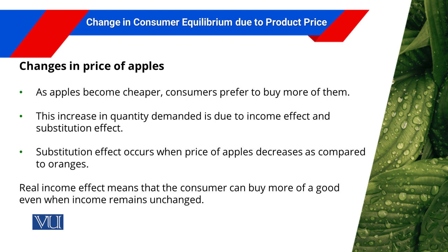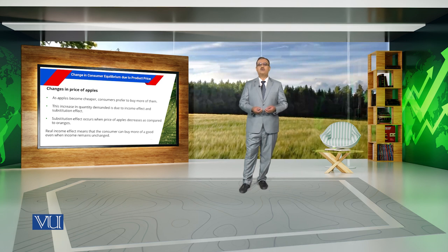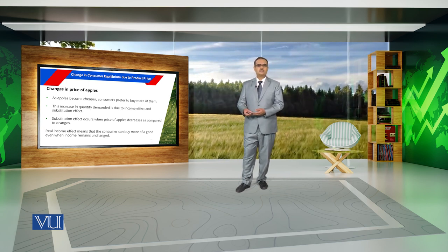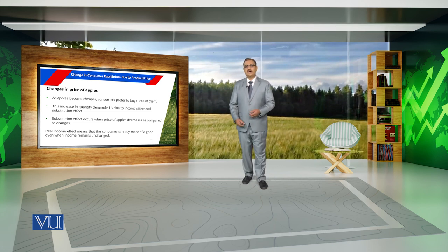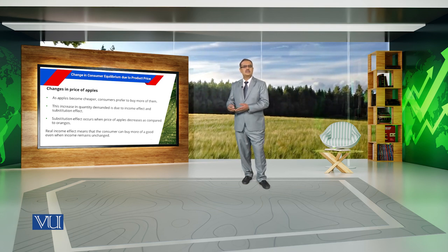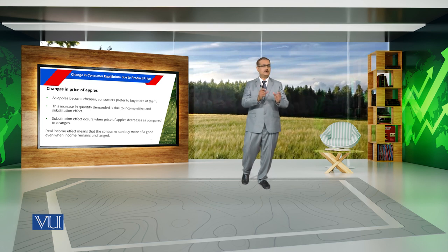This increase in quantity demanded is because of the income effect and substitution effect. In relative terms, when the price of apples decreases while the price of oranges remains constant, the consumer will substitute a certain quantity of oranges with apples. He will increase the consumption of the relatively cheaper commodity compared to the expensive one. When the consumer substitutes a certain portion of oranges with apples, we call this change the substitution effect. Substitution effect occurs when the price of apples decreases relative to oranges, leading the consumer to substitute certain quantity of oranges with apples.